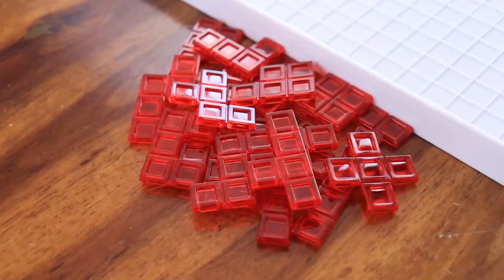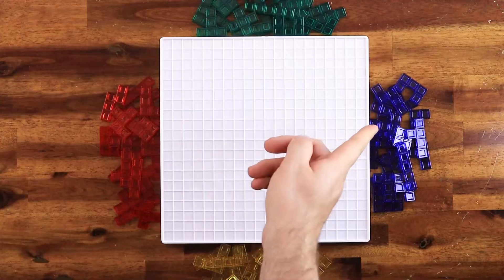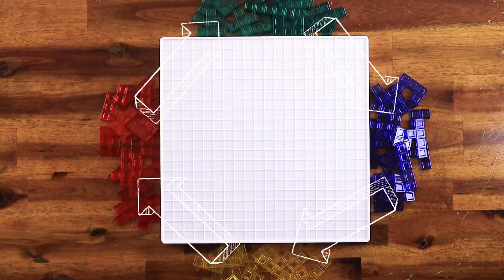Each player chooses a color and takes that set of pieces. Then, choose a player to go first and play proceeds clockwise around the board.